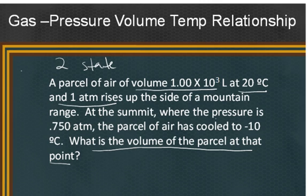At the summit, the pressure has changed to 0.75 atmospheres, and the air has cooled to negative 10 degrees Celsius. So the question is, what is the volume of the parcel at that point? Sometimes this would be called a combined gas law because we have three things changing—volume, pressure, and temperature—instead of just volume and pressure, or temperature and volume.